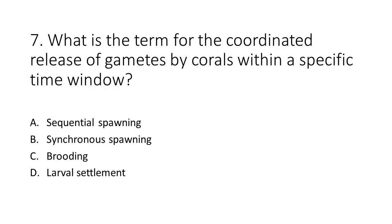Number 7. What is the term for the coordinated release of gametes by corals within a specific time window? A. Sequential spawning. B. Synchronous spawning. C. Brooding. D. Larval settlement.